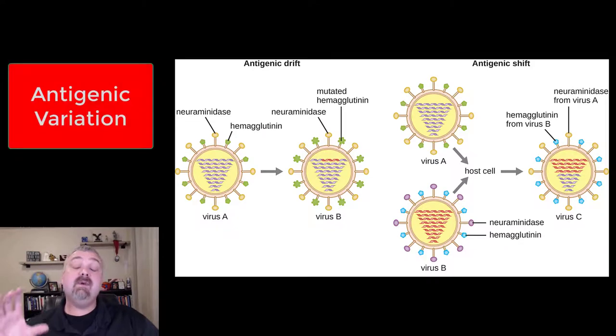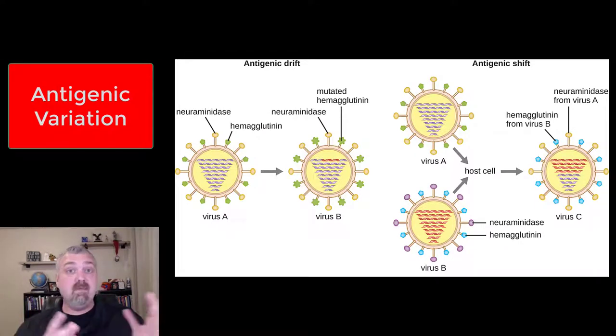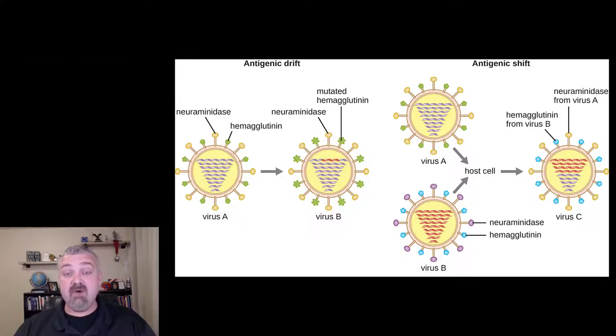Hey everybody, Dr. O here. In this video, we're going to talk about antigenic variation and how organisms use it to hide from and evade the immune system. So first, just a real quick primer on the immune system.